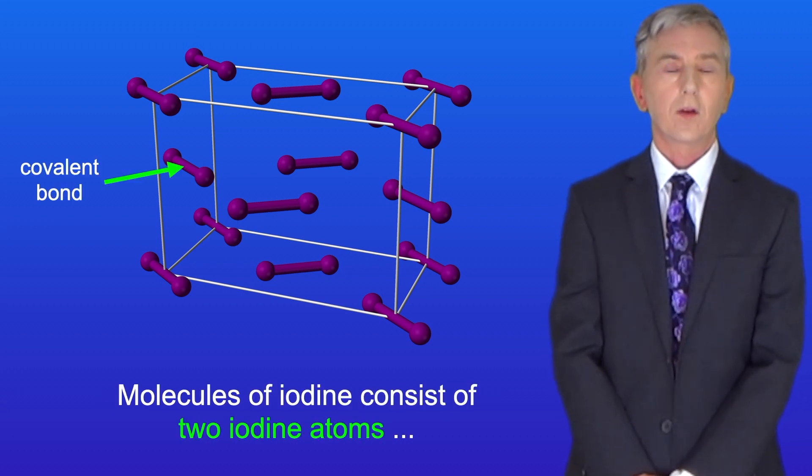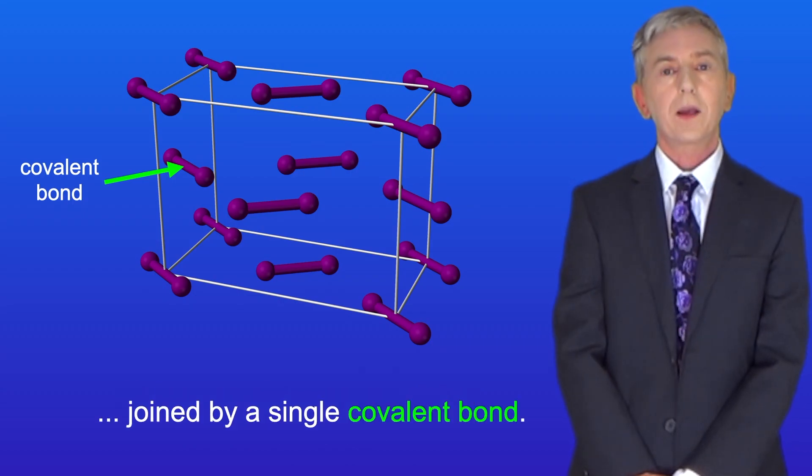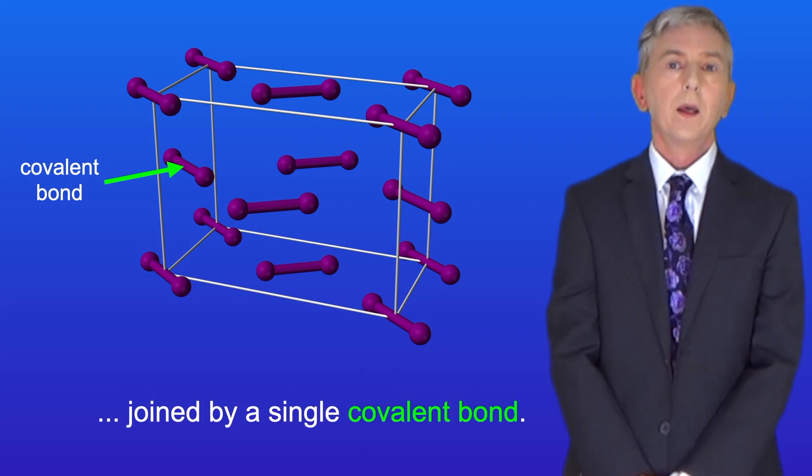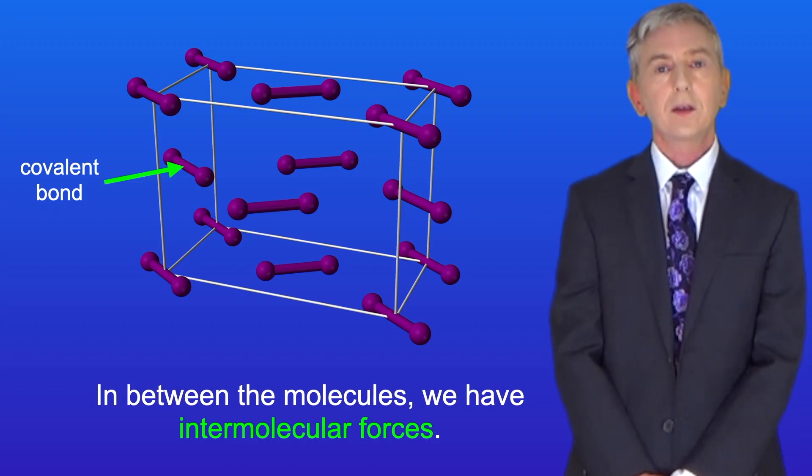Molecules of iodine consist of two iodine atoms joined by a single covalent bond. In between the molecules we have intermolecular forces.